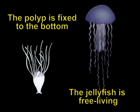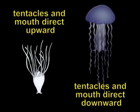The polyp lives attached to the bottom, while the jellyfish is free swimming. The polyp presents mouth and tentacles directed upward, while in jellyfish they are directed downward.